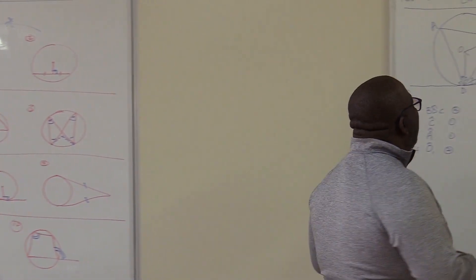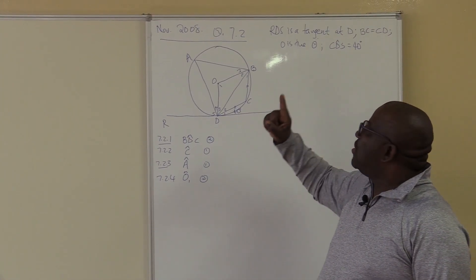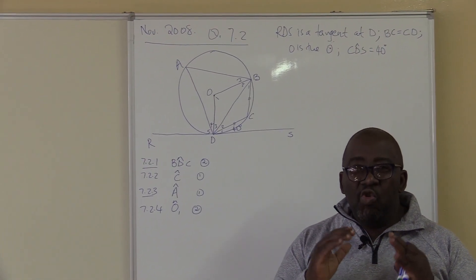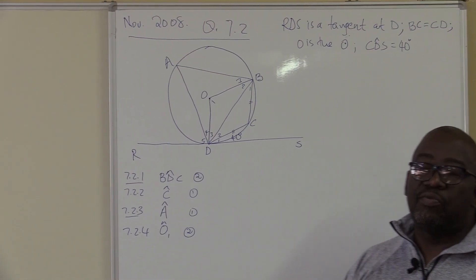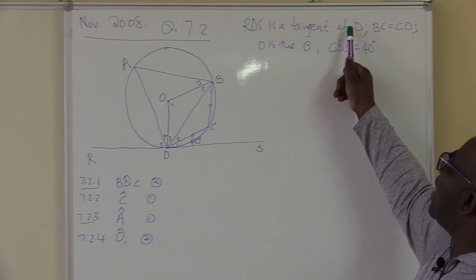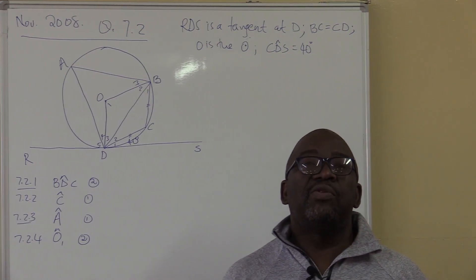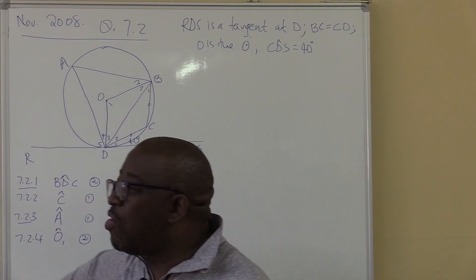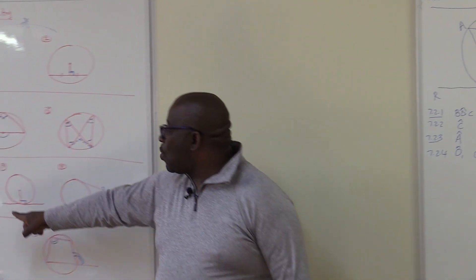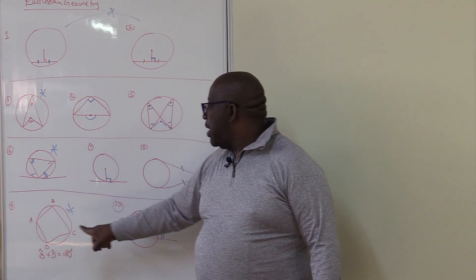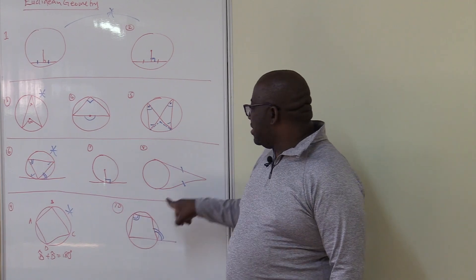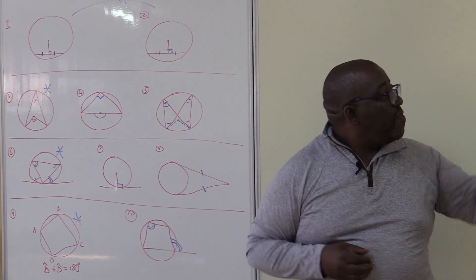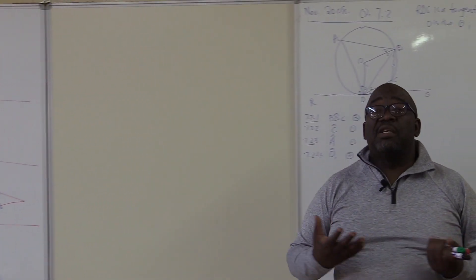Now, let us look at what we're given. The first statement says RDS is a tangent at D. Do I know any theorems that deal with the tangent? Yes — there are only three theorems that deal with the tangent. The Tan-Chord theorem, the Tan-Radius theorem, and two tangents from the same point. This is where your solution will come from, just from the statement that RDS is a tangent at D.